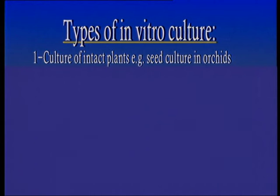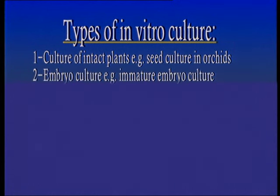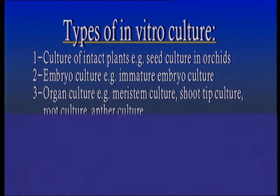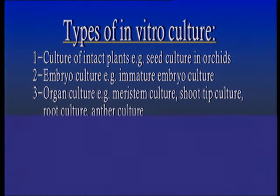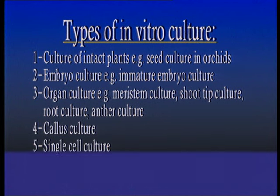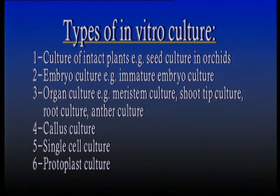There are many types of in vitro culture. These include: culture of intact plants, for example seed culture in orchids; embryo culture, for example immature embryo culture; organ culture such as meristem culture, shoot tip culture, root culture, and anther culture; callus culture; single cell culture; and finally protoplast culture.